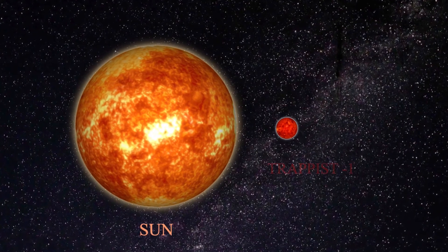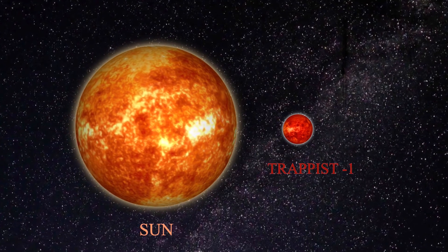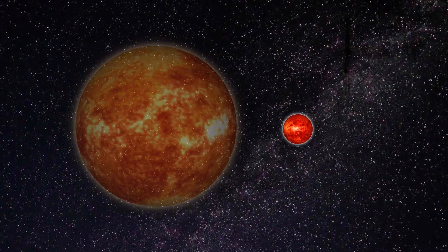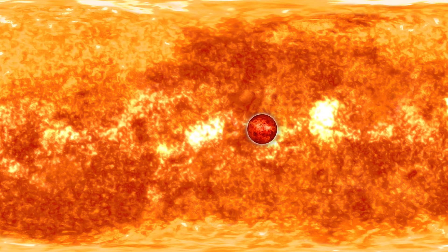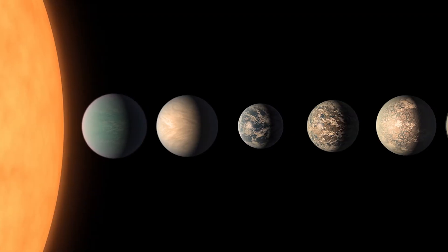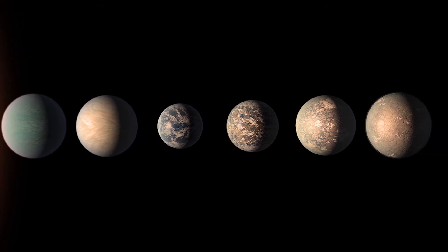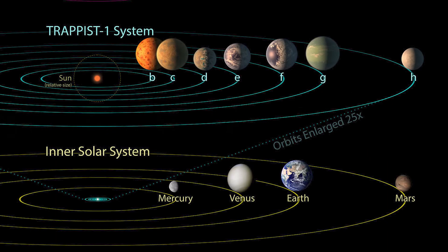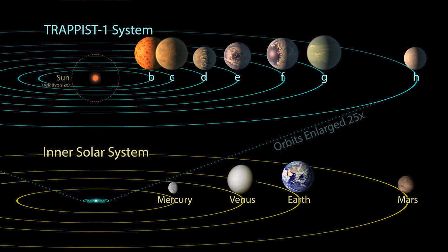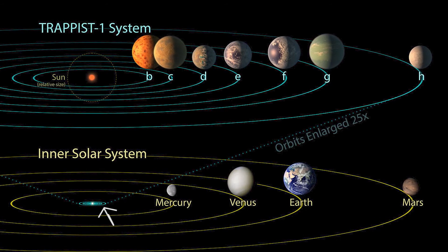TRAPPIST-1 is an ultra-cool red dwarf star that is located 40 light years away from us. As TRAPPIST-1 is an ultra-cool red dwarf, it shines far less bright than our Sun and only has a surface temperature of 2500 Kelvin, whereas the Sun has a surface temperature of 5700 Kelvin. However, what makes this star very interesting is that it harbors seven terrestrial planets around it, which is the most amount of terrestrial exoplanets orbiting the same star currently found. All these exoplanets orbit its parent star very close. When comparing it to our own solar system, the orbits of the seven TRAPPIST-1 planets are smaller than that of Mercury's.